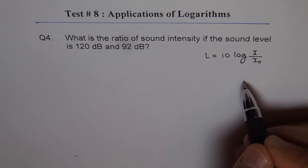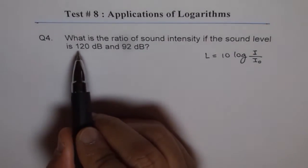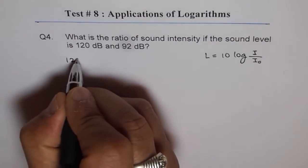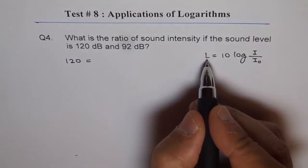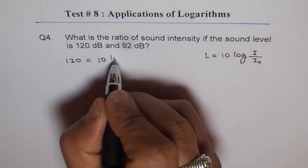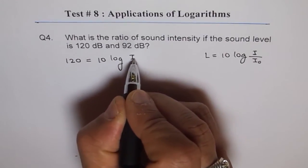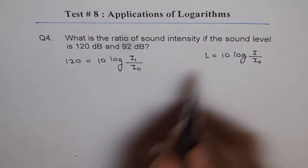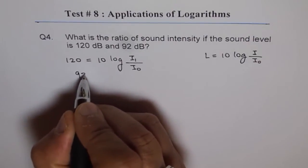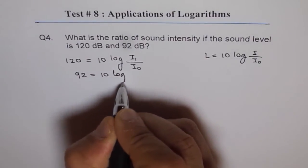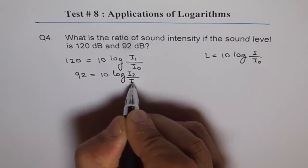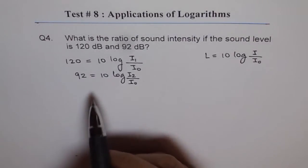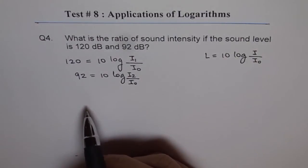Now for 120 decibels, we can write this as 120 equals 10 times log of—let the intensity be I1—so I1 over I0. For 92, we can write this equation as 92 equals 10 log I2 over I0, where I2 is the intensity corresponding to 92 decibels of loudness for the sound level.